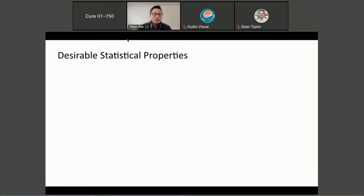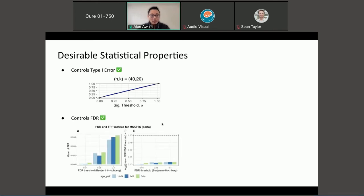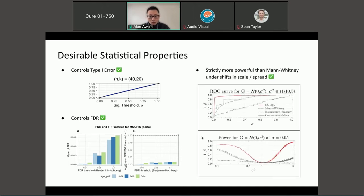Before I talk about some applications to single cell genomics, I want to point out that because this test is nonparametric, first of all it does control the type 1 error. Moreover, we ran an experiment on some semi-synthetic data showing that it also controls the false discovery rate. Finally, for the choice of weights and exponent shown in the previous slide, we show that the test is strictly more powerful than Mann-Whitney.